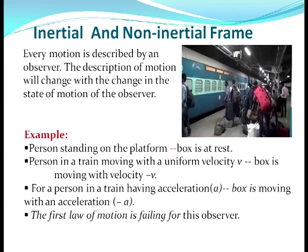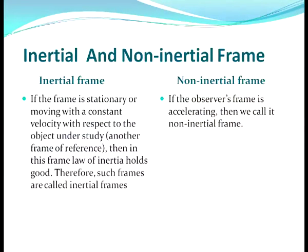But if a person is in a train moving with acceleration a, they will see the box moving with acceleration −a, meaning the first law of motion is failing for this observer. We can now differentiate inertial and non-inertial frames of reference. If a frame is stationary or moving with constant velocity with respect to the object, the law of inertia holds good — such frames are called inertial frames. If the observer's frame is accelerating, it is called a non-inertial frame of reference, because the law of inertia does not hold good in this frame.